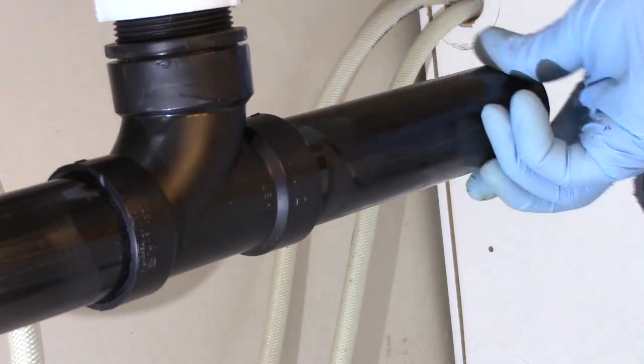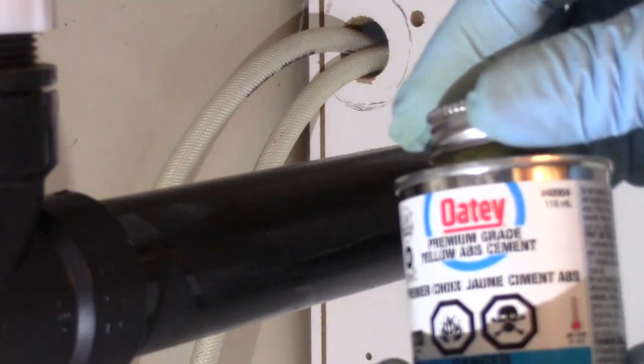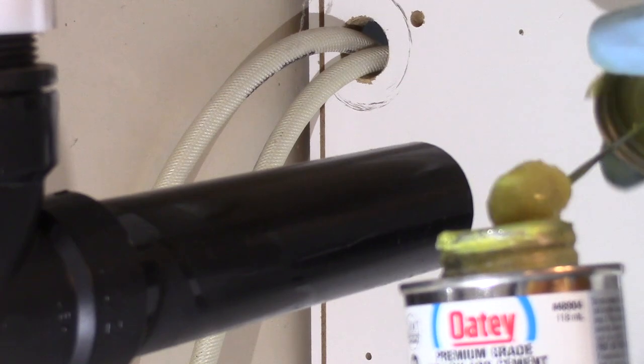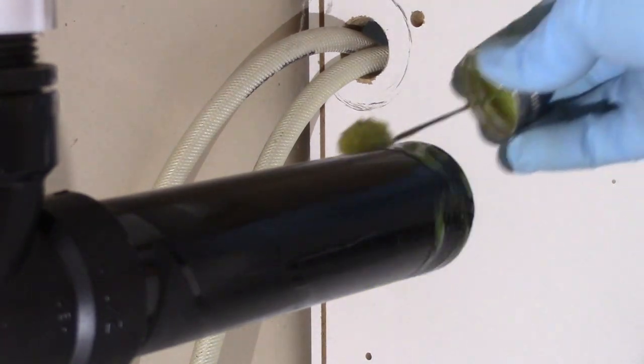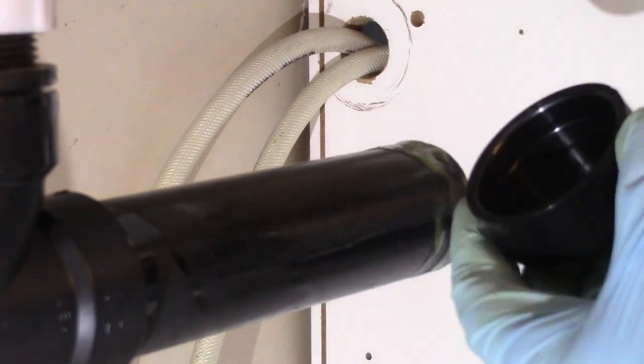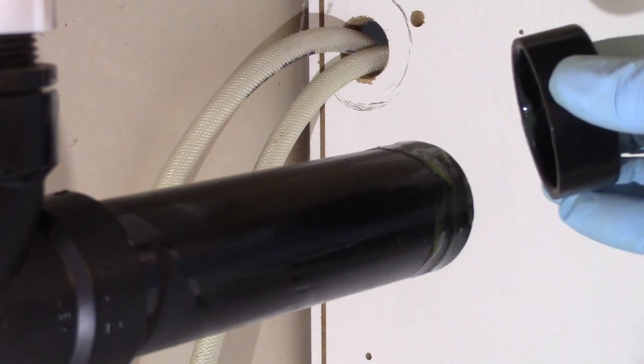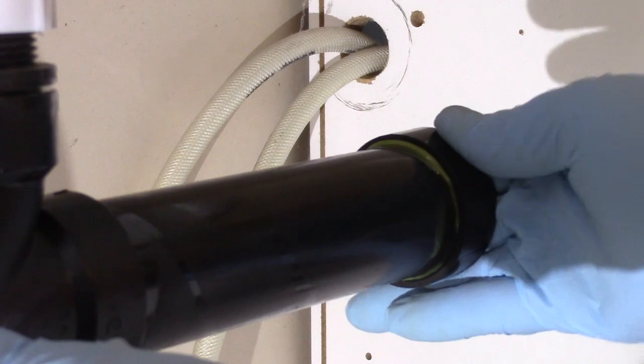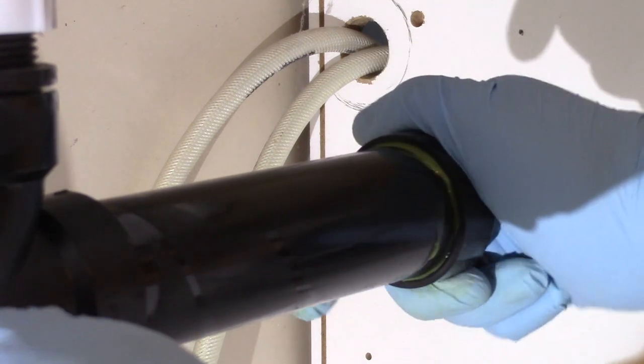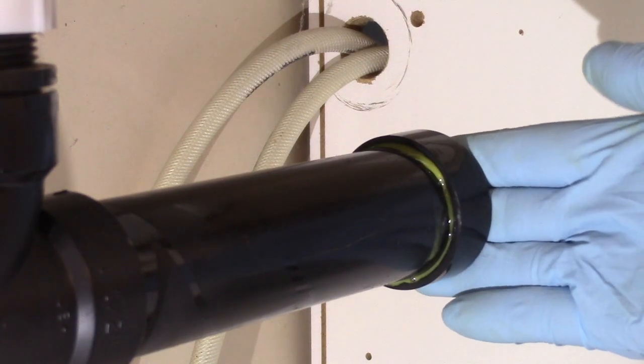We give a quick clean of the area and ready our cap. With the ABS cement we brush the outside diameter of the pipe, then brush the inside diameter of the cap, and install it like so. We're done with the first part and the easiest to do.